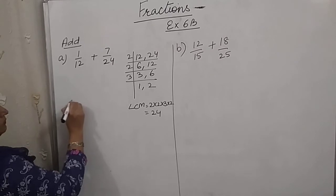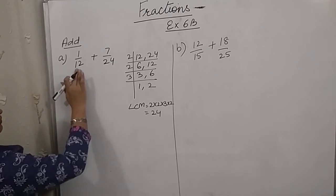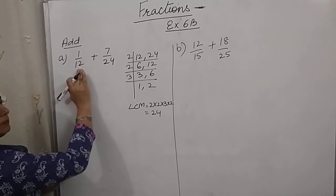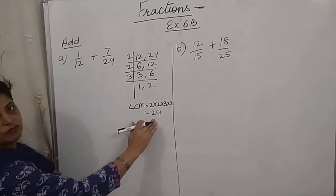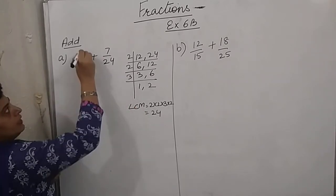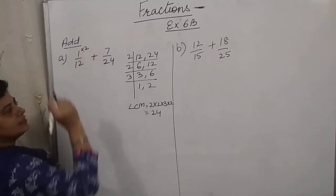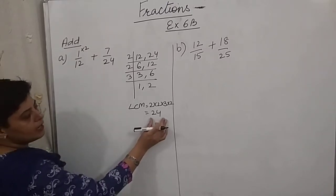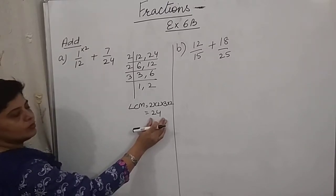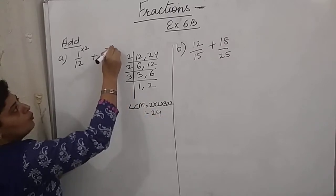Now next step. First of all, 12 should be multiplied by which number to get 24? By 2, and we can write it like this. 24 should be multiplied by which number to get 24? By 1.